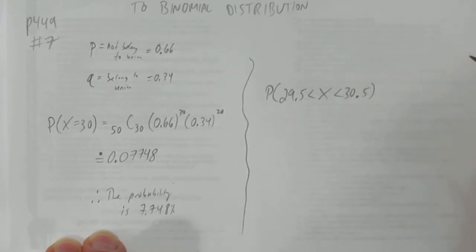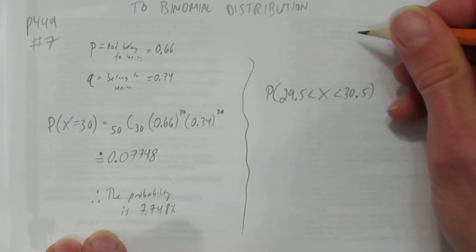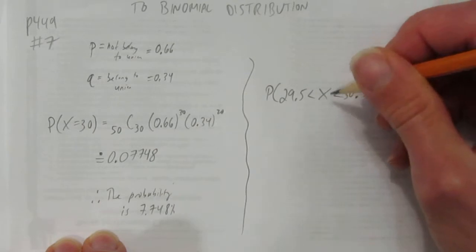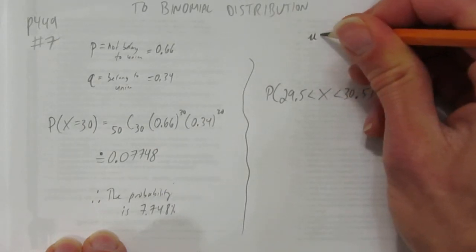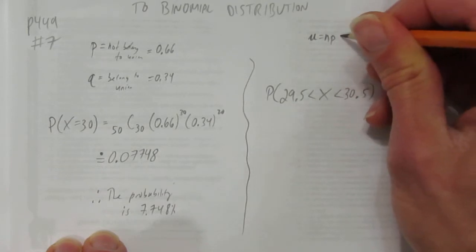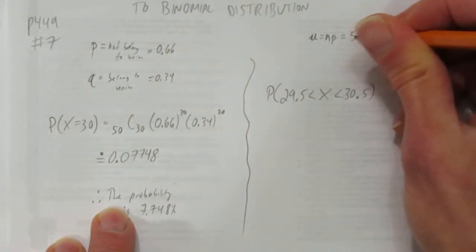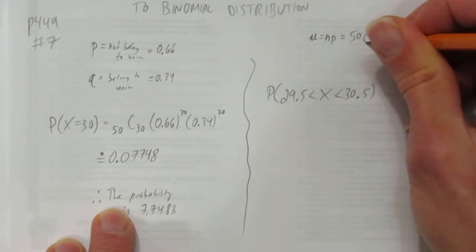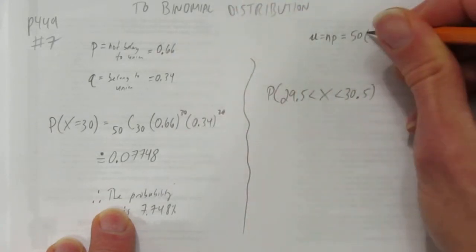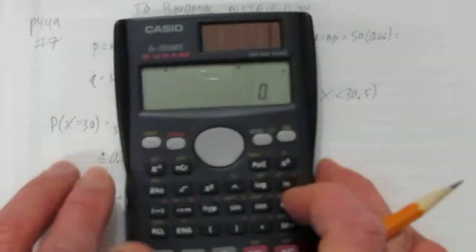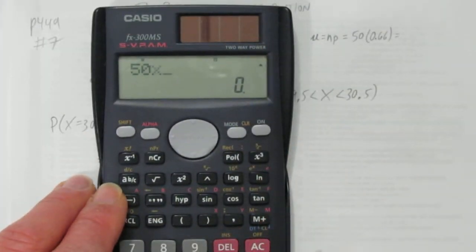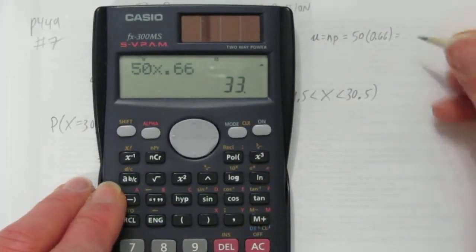But in order to do the normal approximation, we need the mean and we need the standard deviation. So above, we'll calculate what's the mean. We do n times p. What's n? There are 50 people being surveyed, times p, 0.66. And we get, it's 50 times 0.66, 33.